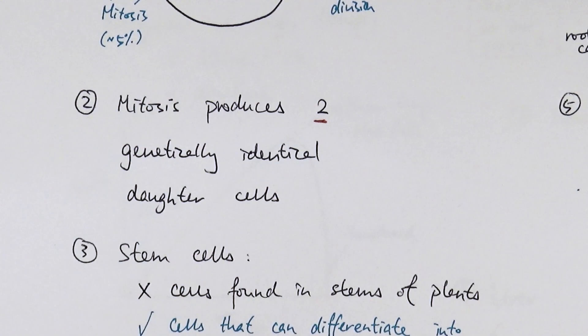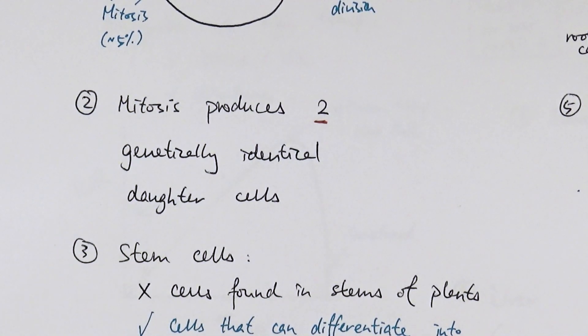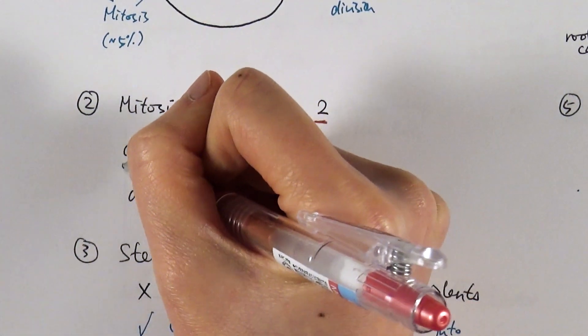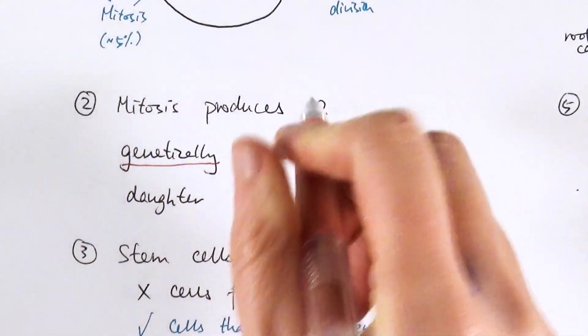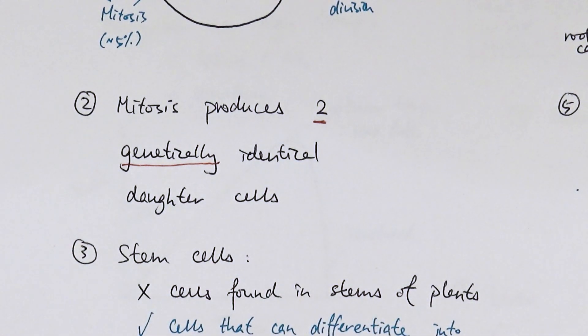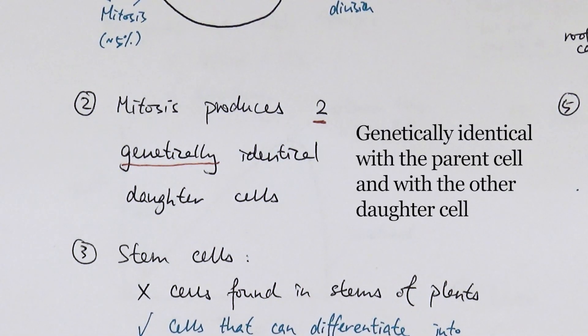And the other thing is very commonly people say mitosis produces two identical daughter cells. Now that's not sufficient because you have to say that they are genetically identical or the fact that the DNA is the same. If you miss that out you're missing a very important detail and actually the most important point about mitosis is that they make genetically identical daughter cells, right? They have to be the same genetically.